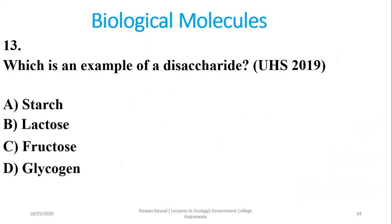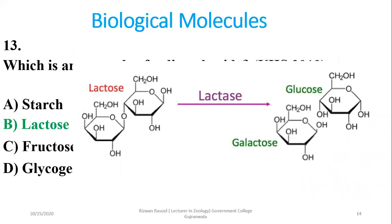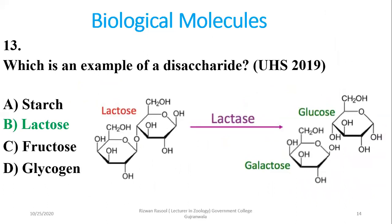Question 13: Which is an example of a disaccharide? Starch and glycogen are polysaccharides. Lactose is the right option — it is a disaccharide consisting of galactose and glucose.